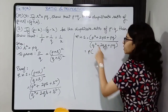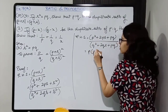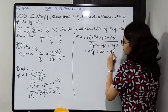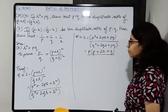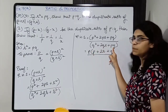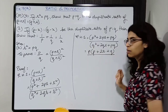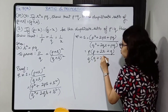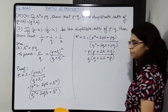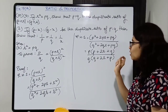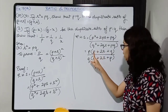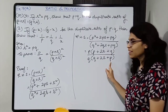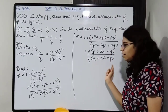Now moving on to part B: if P minus X is to Q minus X be the duplicate ratio of P is to Q, show that 1 upon P plus 1 upon Q equals 1 upon X. This is given. So P minus X is to Q minus X is the duplicate ratio of P is to Q — meaning you have to square P upon Q.